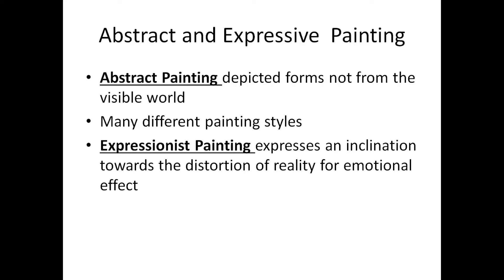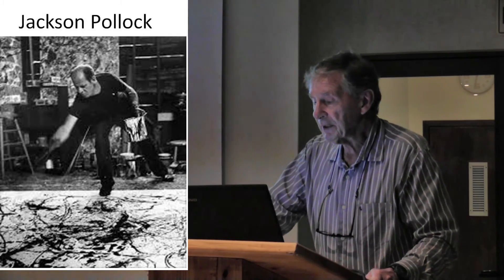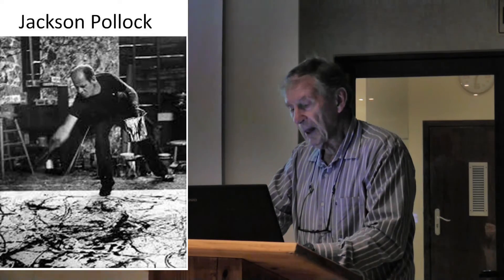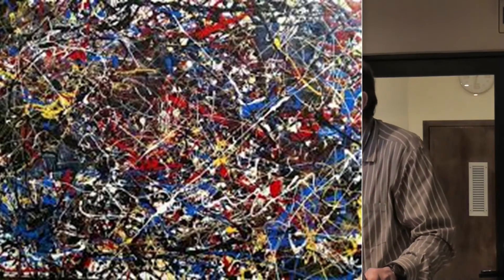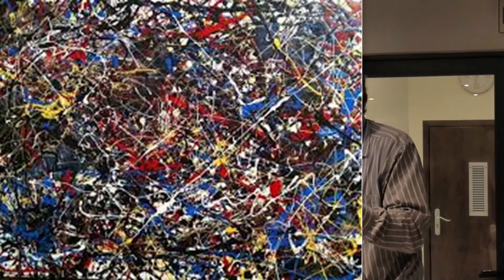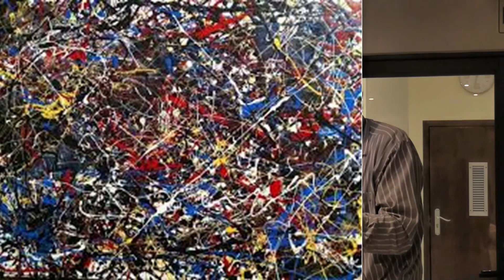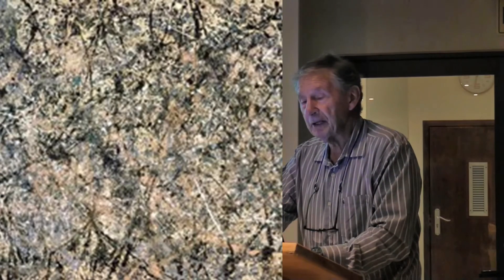Expressionist painting expresses the inclination towards the distortion of reality for emotional effect — again they wanted a reaction from people. This is Jackson Pollock painting. His canvas was on the floor and he threw paint at it, dribbled it, did all kinds of things. This is one of his paintings — blobs of paint, squiggles, lines, all kinds of things to get a reaction, a feeling. Very, very different.